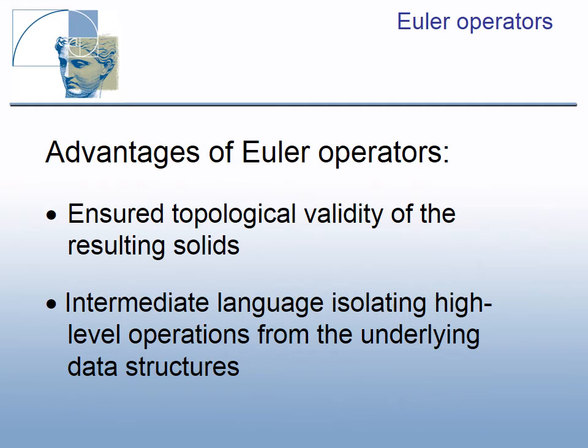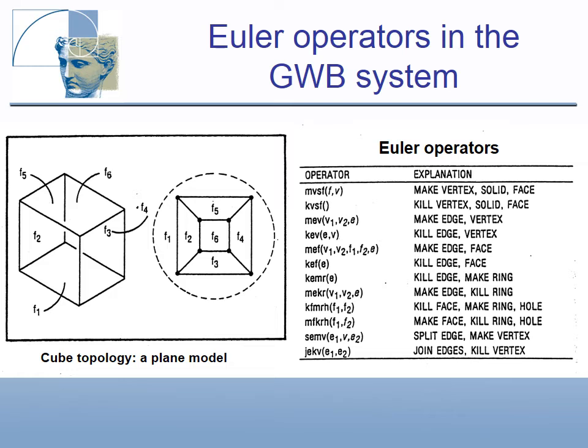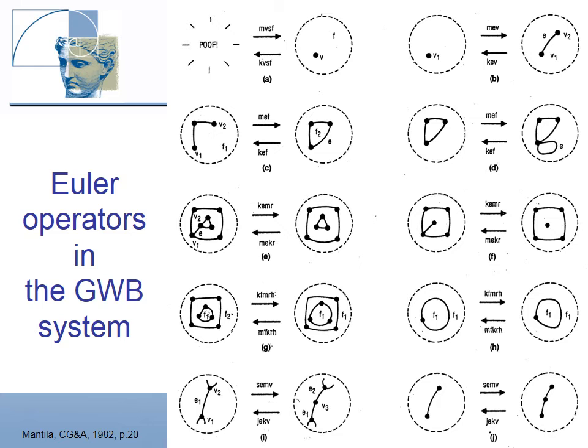Euler operators have clear advantages: they ensure topological validity of the resulting solids, and they can be used as an intermediate language isolating high-level operations from the underlying data structures. For example, the MEV command adds a vertex and makes an edge between two vertices; then another MEV command can add a new edge to two existing edges and create a new face.